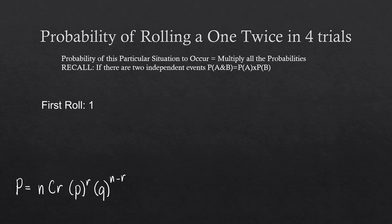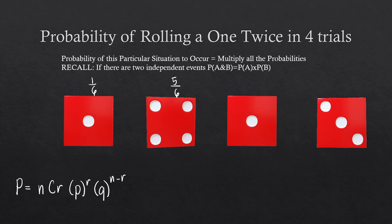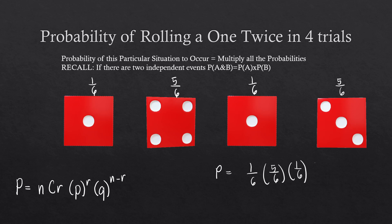Say in my first roll I got 1, second roll I got 4, third roll I got 1, and fourth roll I got 3. The probability of getting a 1 is 1/6, and the probability of getting a number other than 1 is 5/6 — we count 5/6 because 2, 3, 5, or 6 all count as failure. So for this specific situation, the probability is 1/6 × 5/6 × 1/6 × 5/6.